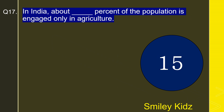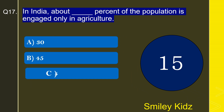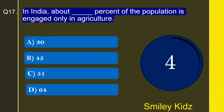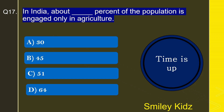Moving to question number 17: In India, about what percent of the population is engaged only in agriculture? Options are 30, 45, 51, or 64. The correct answer is 64. In India, about 64 percent of the population is engaged only in agriculture.